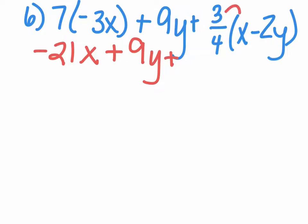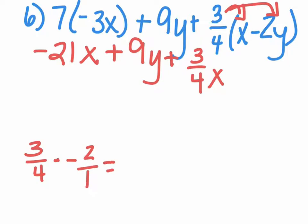And now we need to distribute. Three-fourths times x is three-fourths x. And three-fourths times negative 2y—three-fourths times negative 2—gives us negative six-fourths y, because there's a y right there.